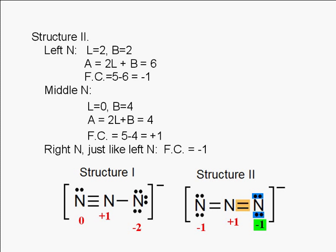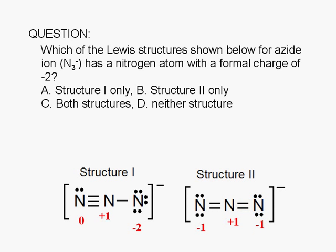Now going back to the question. The structure that has a nitrogen atom with a formal charge of negative 2 is structure 1 only.